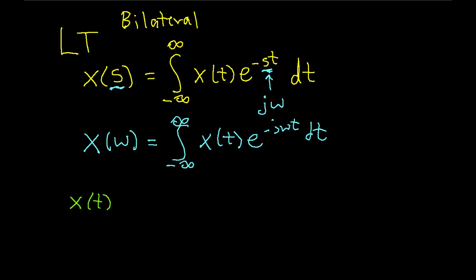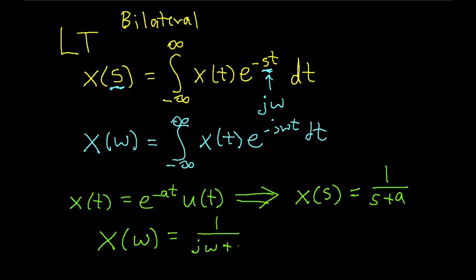So as an example, x(t) = e^(-at)u(t). Those of you that have already studied Laplace transforms will know that the Laplace transform of this, X(s), X(s) is 1/(s+a). Using this result that we've just looked at, we can say that X(ω) is equal to 1/(jω+a).